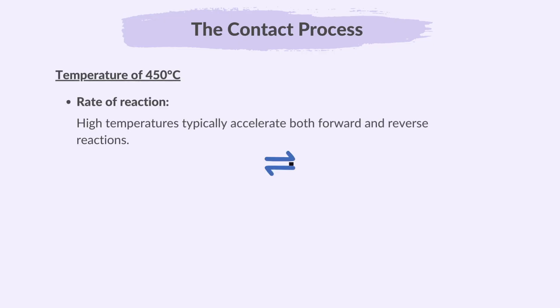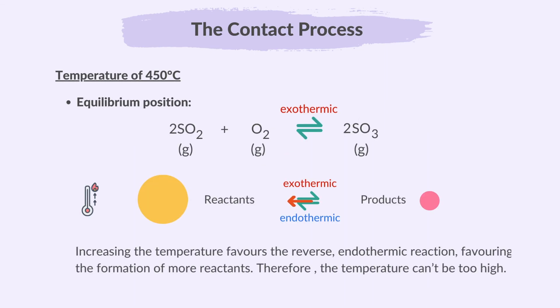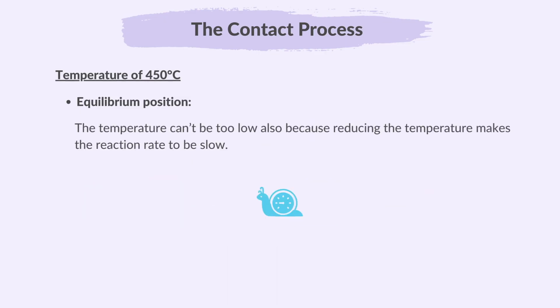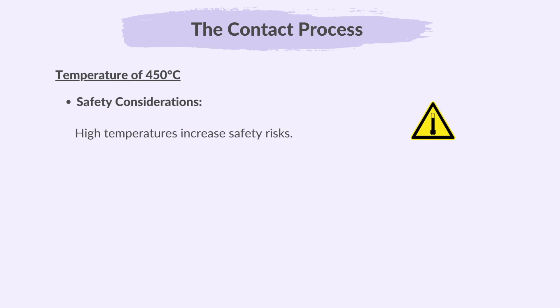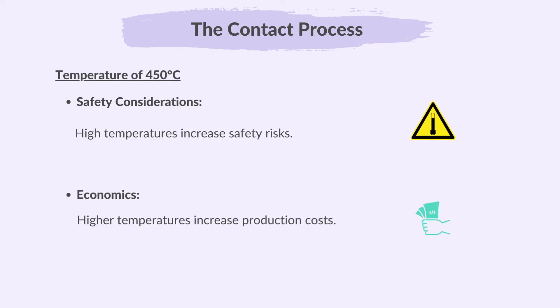Let's see why a temperature of 450 degrees Celsius is used in the Contact process. High temperatures typically accelerate both forward and reverse reactions. In terms of equilibrium position, increasing the temperature favors the reverse endothermic reaction, favoring the formation of more reactants, so the temperature can't be too high. The temperature also can't be too low, because reducing the temperature makes the reaction rate slow. Higher temperatures also increase safety risks and production costs.